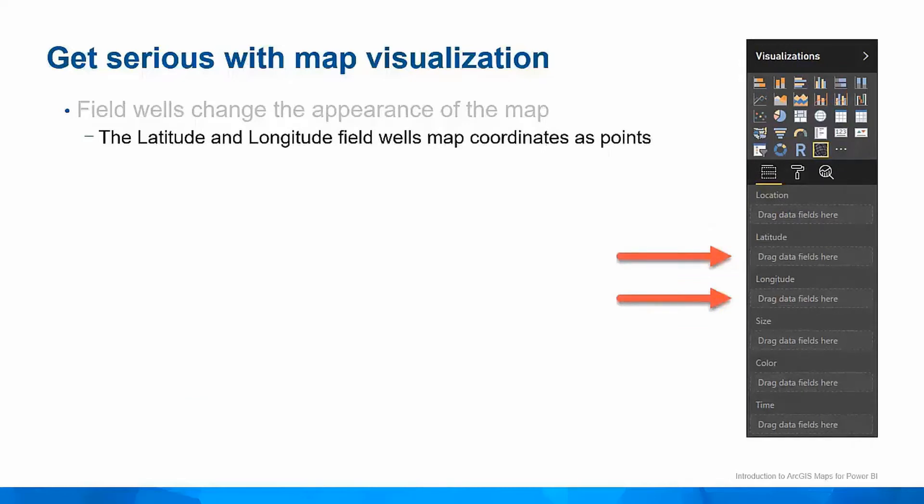You can also add locations to the map using the Latitude and Longitude field wells. These fields will be provided by your GIS person, or they may be included in the dataset you're working with. If you have them, it's best to use them, as the map will perform faster and you will be able to add more points.